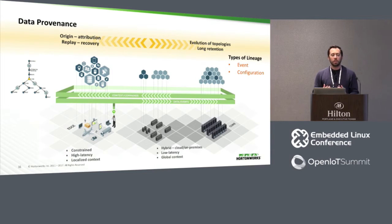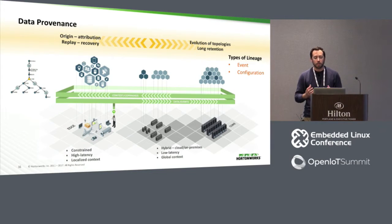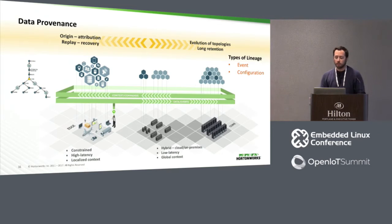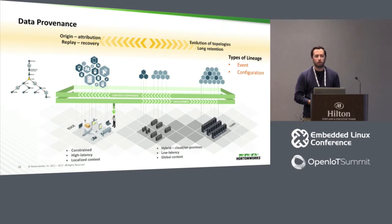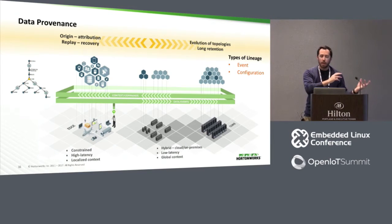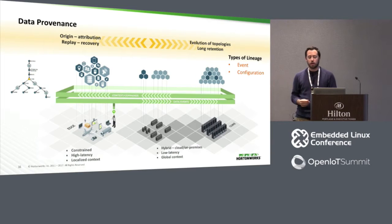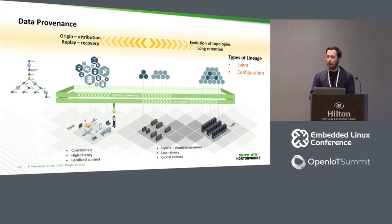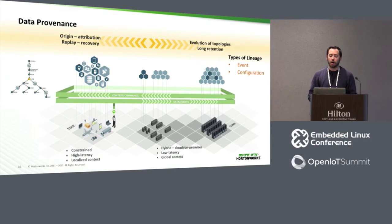I mentioned data provenance earlier. Data provenance really is a very detailed lineage of the data that comes into your system. The edge — everywhere that we don't have a data center — is all the devices, hardware, laptops, mobile phones, whatever is producing this data. We're sending it back over the data plane to our core, where we have our large clusters and big data systems. How do I know I'm getting accurate data at the right time, and which hops it went through? All of those pieces of metadata we call the provenance.